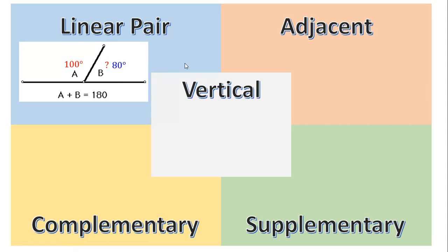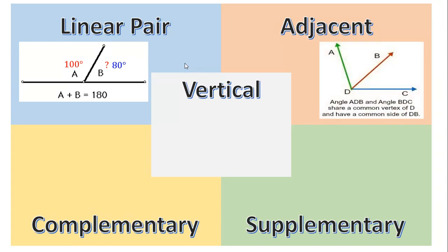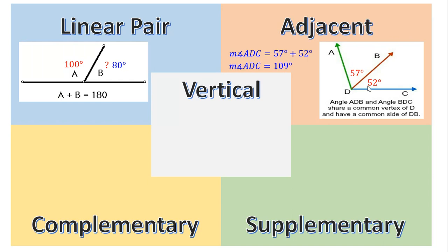The second type is called adjacent angles. Adjacent angles are basically next to each other. They share a common vertex D, and they also share a common side, or you can say a common ray — a ray that begins at D and goes on forever. Adjacent angles add up to equal the total. So if one angle is 57 and the other is 52, you add them to get the entire angle, which is ADC equals 109 degrees.